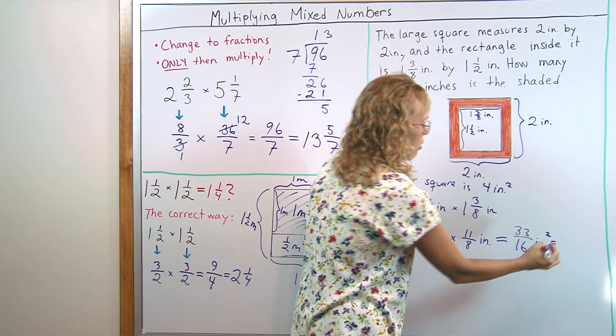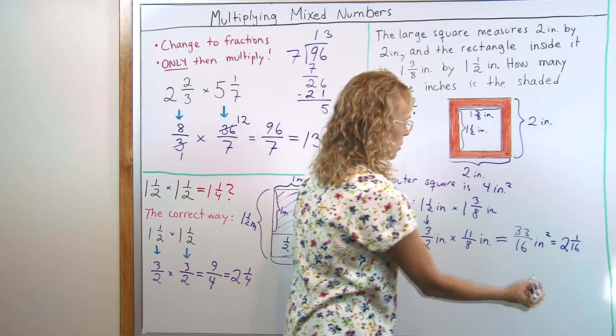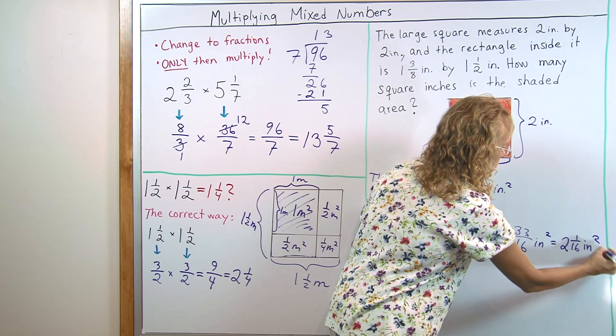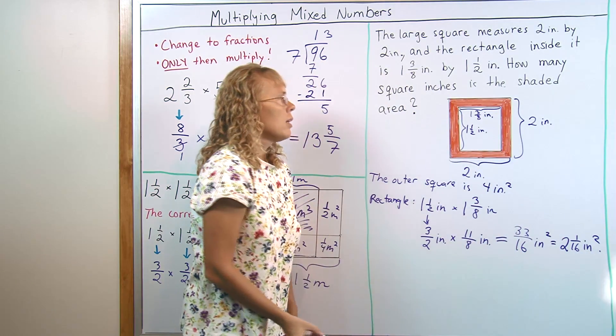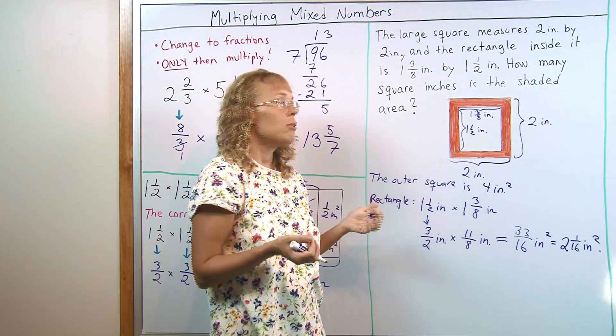Which is just a little over 2 square inches. 2 and 1 sixteenths square inches. Now, we have the area of the inside rectangle and area of the outer square. Now, we subtract.